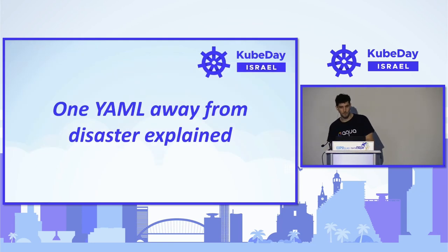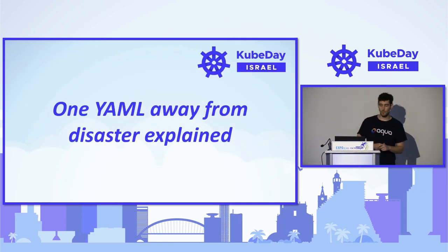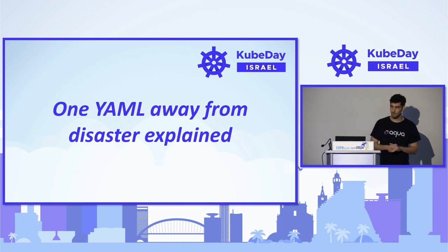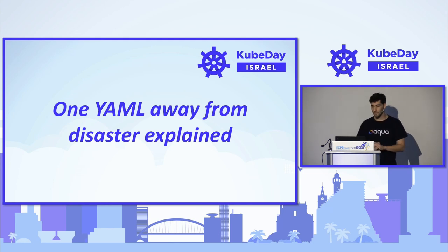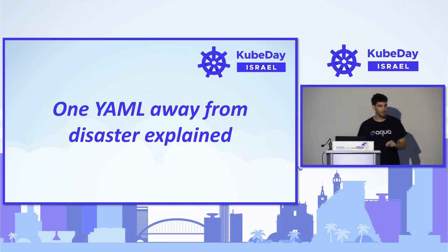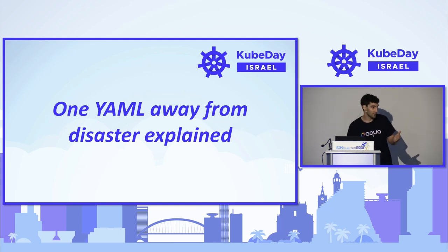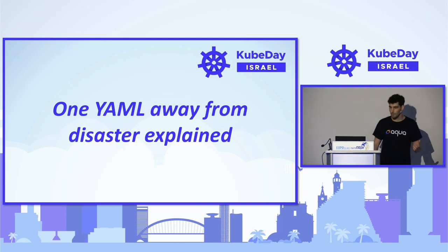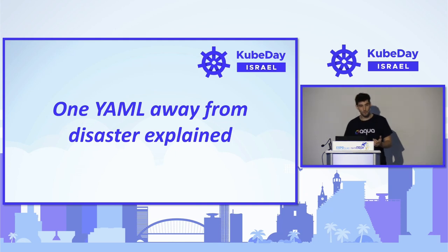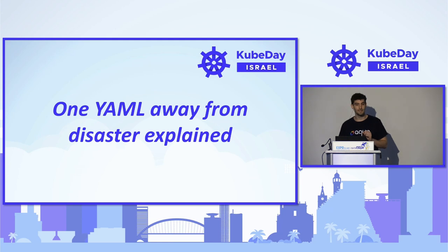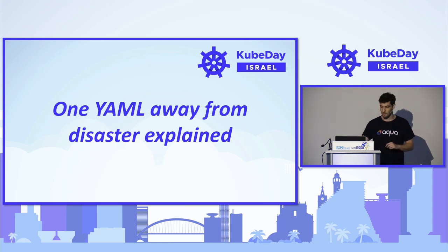We decided to name our talk 'One YAML Away from Disaster.' This is because of two main misconfigurations we kept seeing, both of which present an immediate threat to clusters. They are not new — we have seen them for a long time — but we wanted to figure out why they keep showing up and what impact they still cause on organizations.